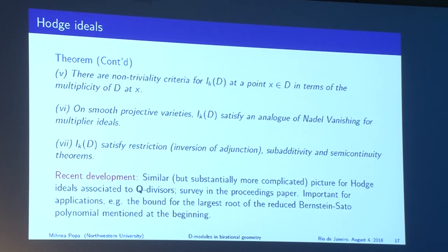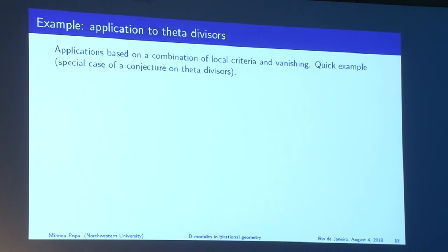Before discussing Hodge modules from families, let me illustrate how local criteria and global vanishing work together in practice, using the example of theta divisors on abelian varieties. This is precisely the mixture of local non-triviality criteria and global vanishing theorems that is brought into play.